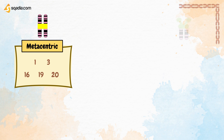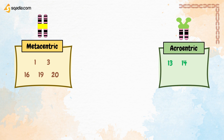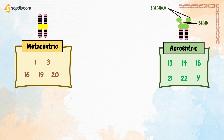Chromosomes with the centromere near one end are acrocentric. Chromosomes 13, 14, 15, 21, 22, and Y are acrocentric. Acrocentric chromosomes also have a stalk and satellite. A chromosomal satellite is the part at the end of a chromosome separated from the rest by a secondary constriction, while the primary constriction refers to the centromere region. These satellite regions also contain nuclear organiser regions, which are chromosomal landmarks consisting of tandemly repeated sequences of ribosomal genes.